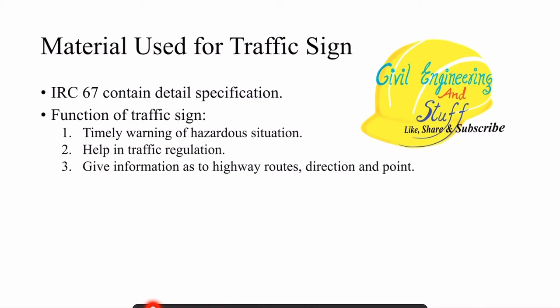If you are from a different country and watching this video, your specifications may or may not vary. The provisions for location of traffic signs in different locations may vary. So this discussion is as per IRC 67. The function of a traffic sign — a traffic sign can be described as efficient if it gives timely warning, helps with better traffic regulation, and gives information about the route in which the driver is moving.